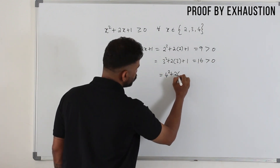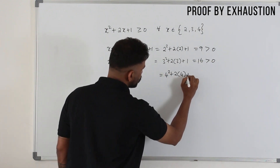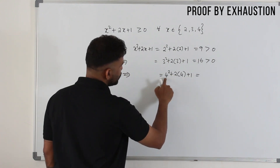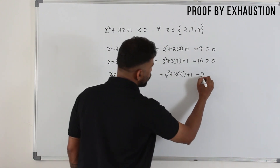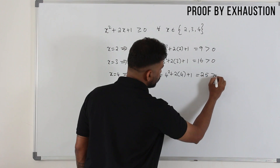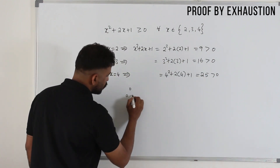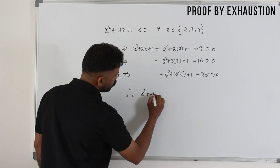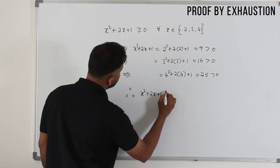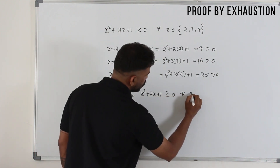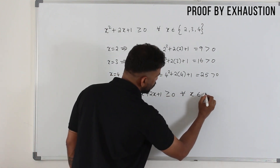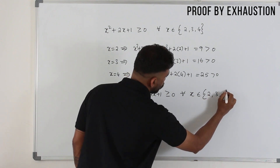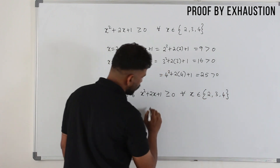For x = 4: 4² + 2(4) + 1 = 16 + 8 + 1 = 25. Write the conclusion: therefore x² + 2x + 1 ≥ 0 for all x belonging to {2, 3, 4}. Hence proved.